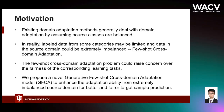We refer to this as few-shot cross-domain adaptation, where the classes with limited samples denote few-shot classes, while others represent normal classes. The few-shot cross-domain adaptation problem could raise concern over the fairness of the corresponding learning tasks, as the available training data is already contaminated by bias towards classes with the majority of samples.